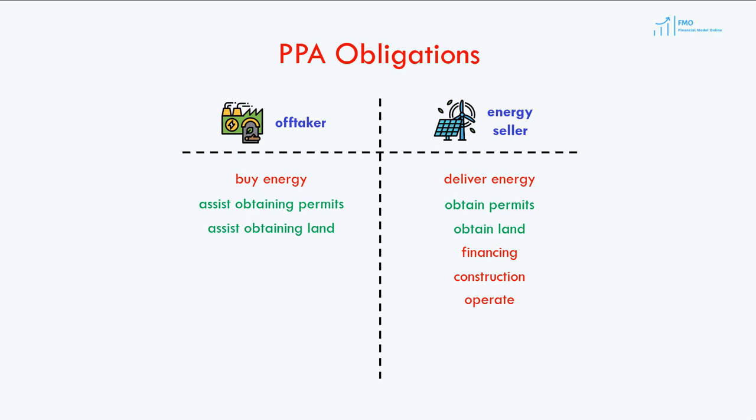Note that such events as getting all the necessary permits, reaching financial close, starting and ending construction, and beginning operations will be defined as project milestones in the PPA, and will have specific dates. Failing to achieve these milestones will, typically, result in the default of the PPA, with important negative consequences for the energy seller.